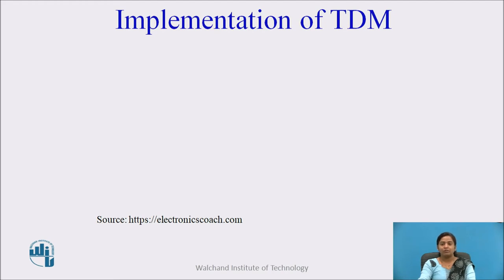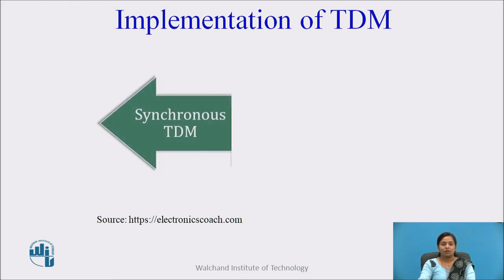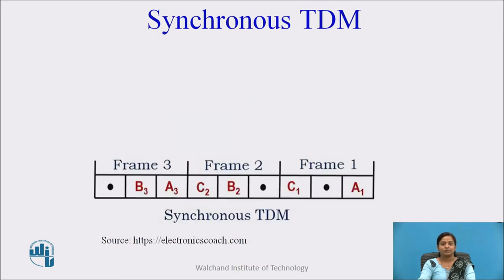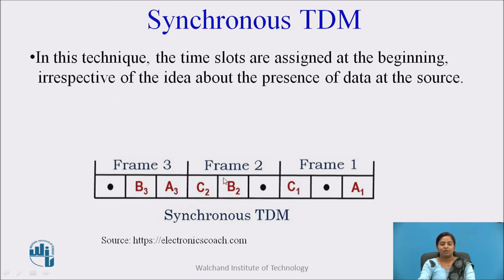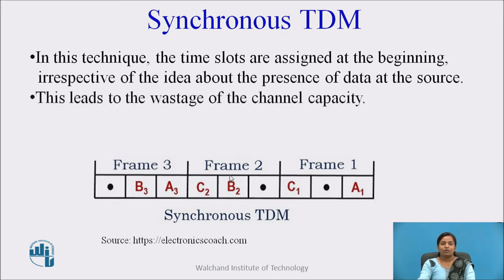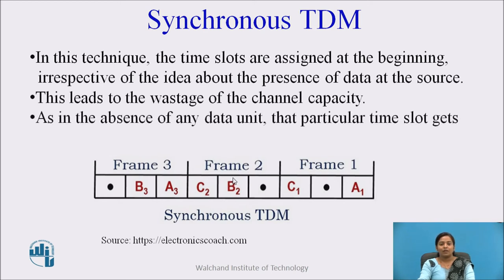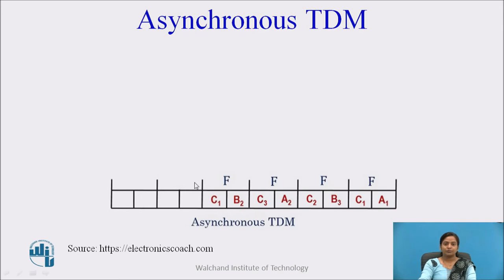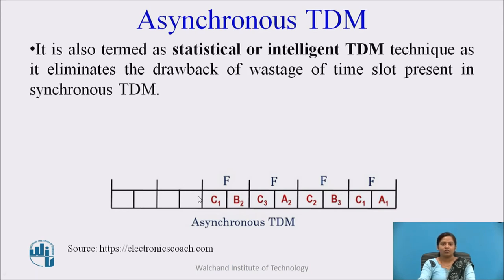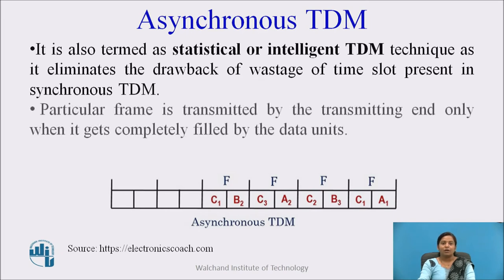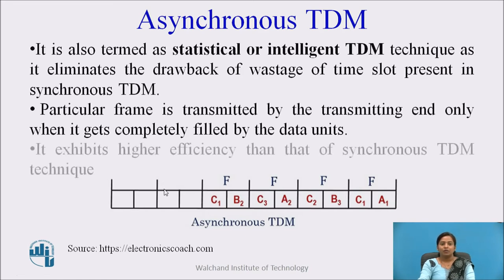TDM signal is implemented in two ways: synchronous TDM and asynchronous TDM. In synchronous TDM, time slots are assigned at the beginning irrespective of whether data is present at the source, which leads to wastage of channel capacity. Asynchronous TDM, also termed statistical or intelligent TDM, eliminates this drawback — a frame is transmitted only when completely filled with data, exhibiting higher efficiency.